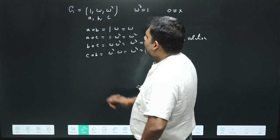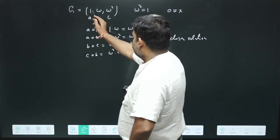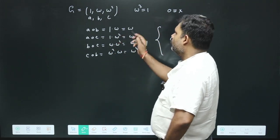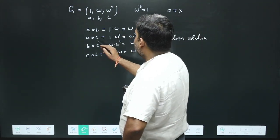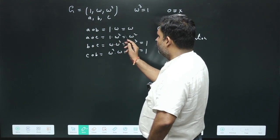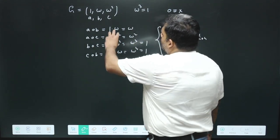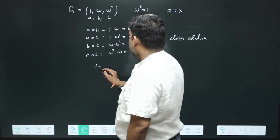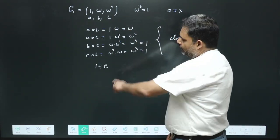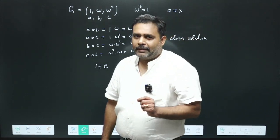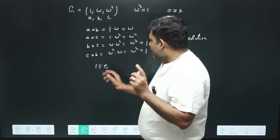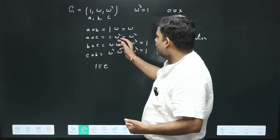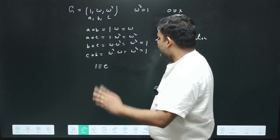Next, we identify the identity element. We can see that a = 1, when multiplied with ω, gives ω, and when multiplied with ω², gives ω². So 1 is the identity element, because multiplying any element by 1 returns that same element.